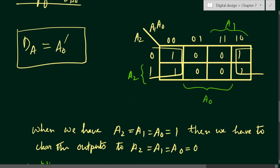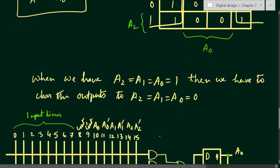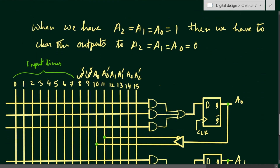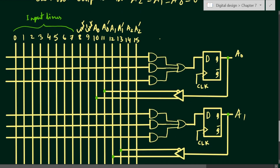There is one extra step: whenever A2 = A1 = A0 = 1 (state 7), we have to clear the outputs so A2, A1, A0 = 0. So we need to define one carry output as well as its complement.